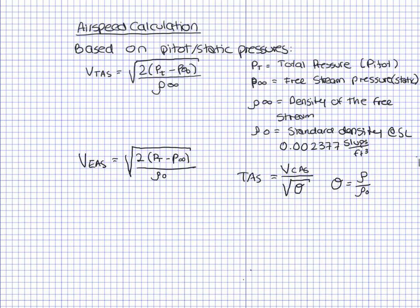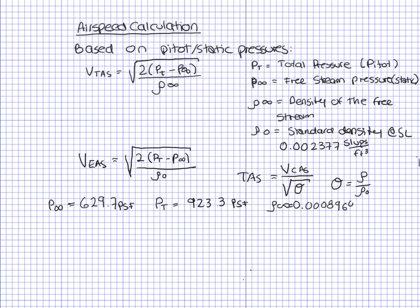Here's an example. The free stream static pressure P-infinity is 629.7 psf. The total pressure Pt is 923.3 psf. The density of the free stream is 0.0008968 slugs per cubic foot. Find the true airspeed and equivalent airspeed.